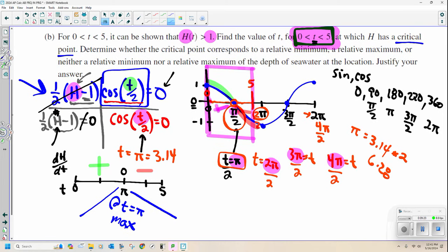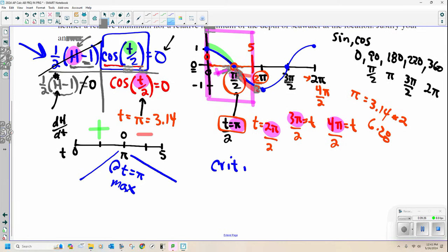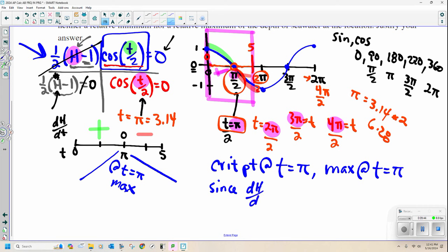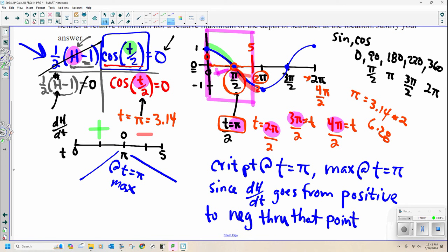Okay, well, let's answer the question. Okay, determine where the critical point, what value of t. So there's a critical point at t equals pi, or you could say 3.14, but pi is precise. And then there's a maximum at a value of t equals pi since dh dt goes from positive to negative through that point. Or through t equals pi. You're done.